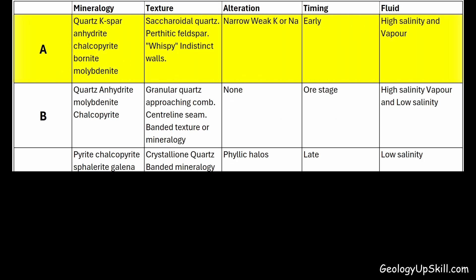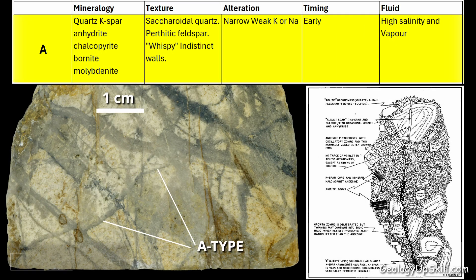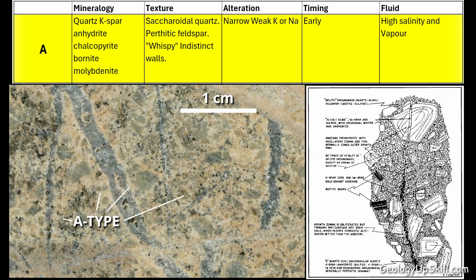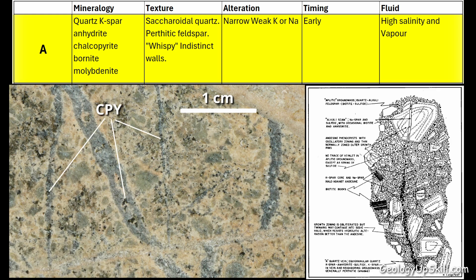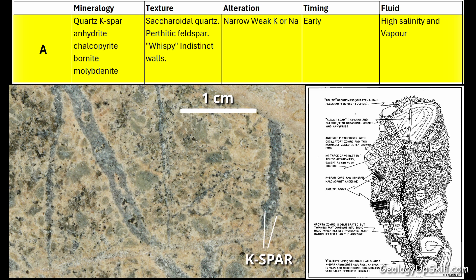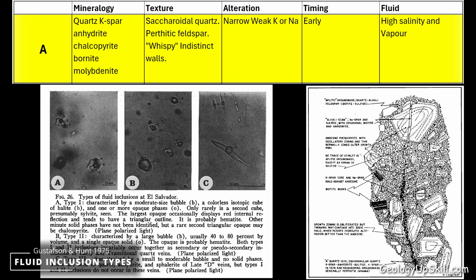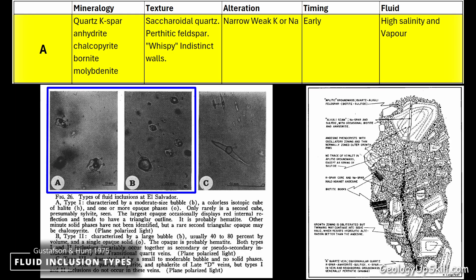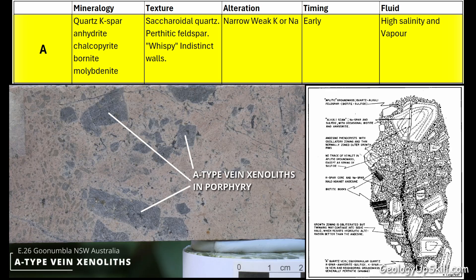In summary, A-type veins are irregular, wispy stockworks filled with saccharoidal quartz, anhydrite and perthitic feldspar. Chalcopyrite and bornite occur disseminated through the quartz. Veins merge into wallrock with indistinct boundaries. They have thin, weak halos of K-feldspar or albitic alteration. Fluid inclusions are abundant with saline and vapour-rich populations. Timing is early relative to other veins and to ore.